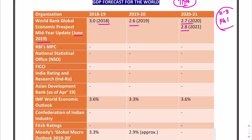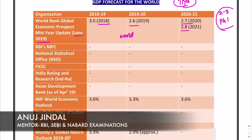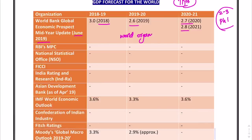One interesting thing to remember: whenever we talk about world GDP forecasts given by world organizations, when an international organization says GDP forecast for 2018, it means GDP forecast for 2018-19. Similarly, when it says 2019, it means 2019-20.